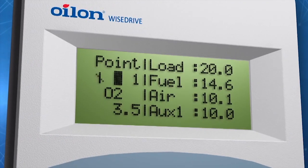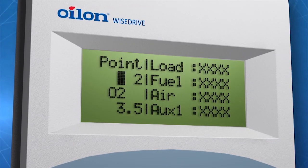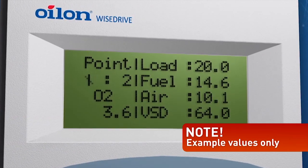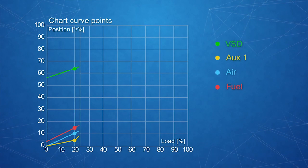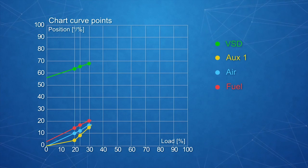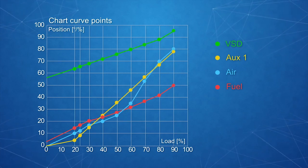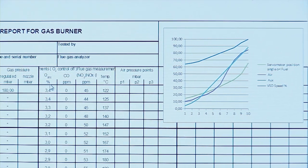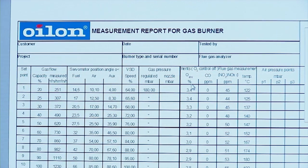Note that you can modify any point data at any time. Continue with the next points by adjusting the load manually and then adjusting the other values to match the actual values. You can create a maximum of 15 curve points. Normally it's enough to set 7 to 10 curve points, depending on the fuel. The ratio curve should be as smooth as possible. When all curve points have been created, save the whole parameter setup by pressing enter after exiting the menu. Remember to fill in the measurement report for the burner.